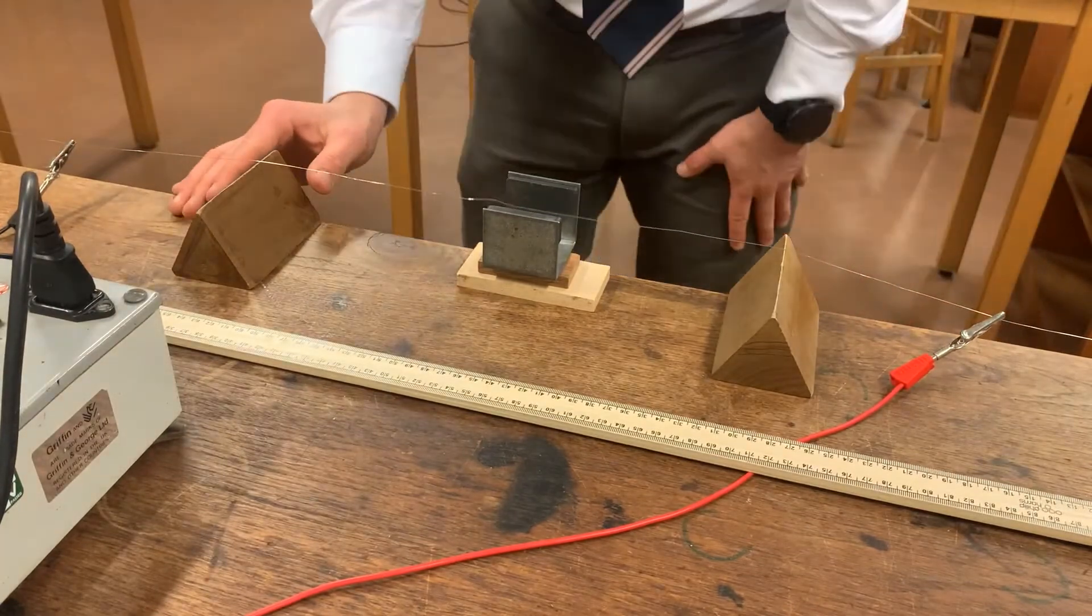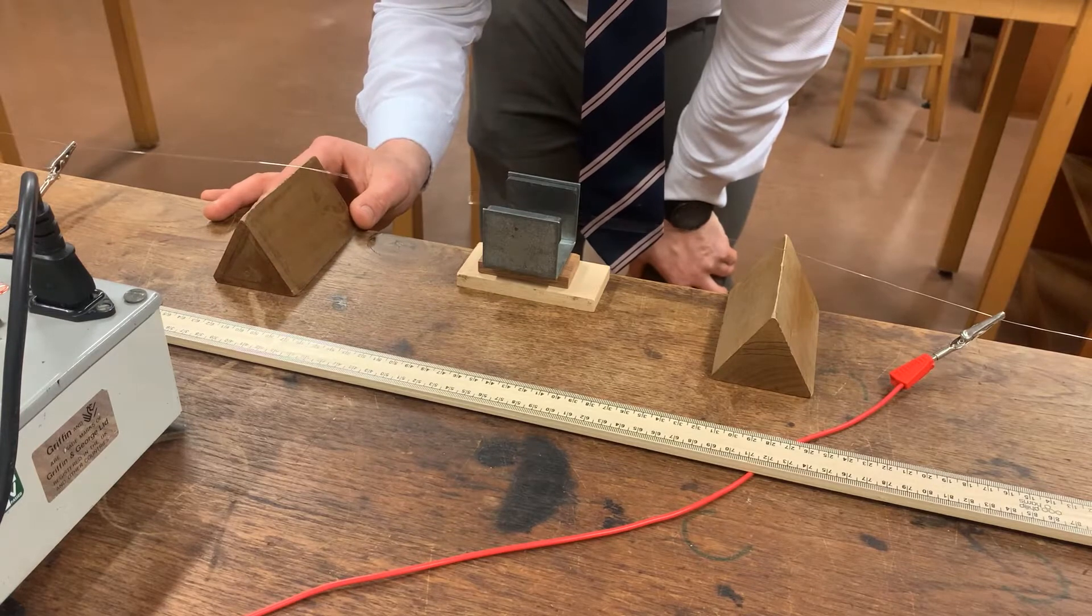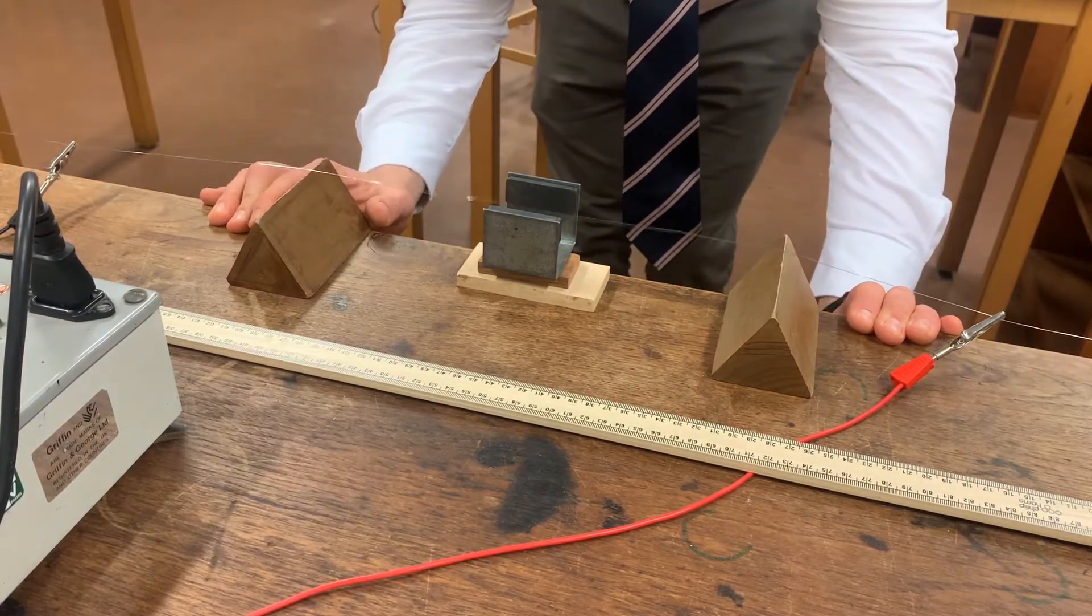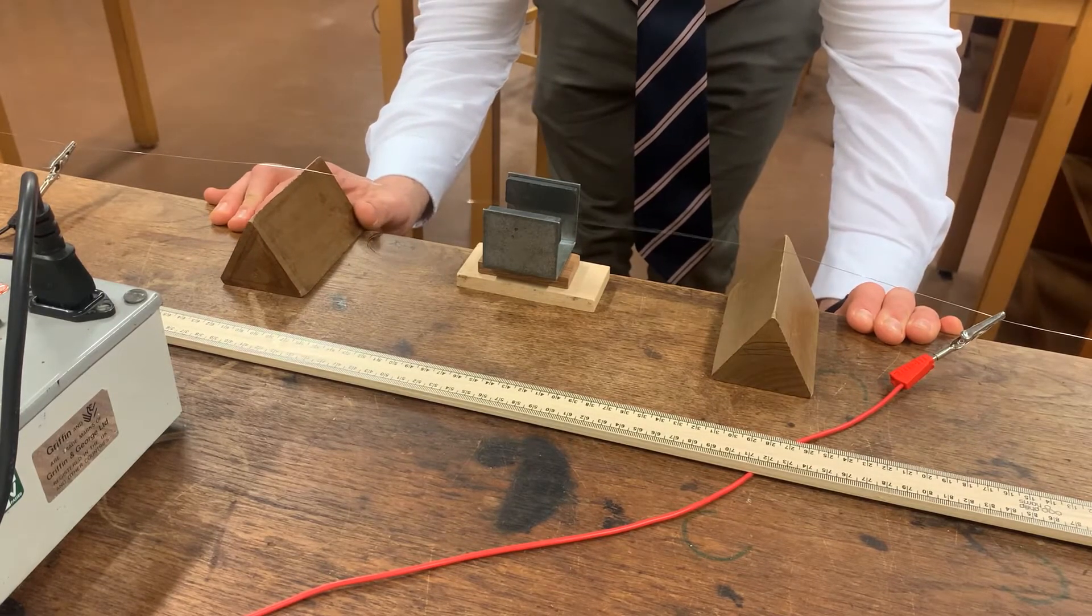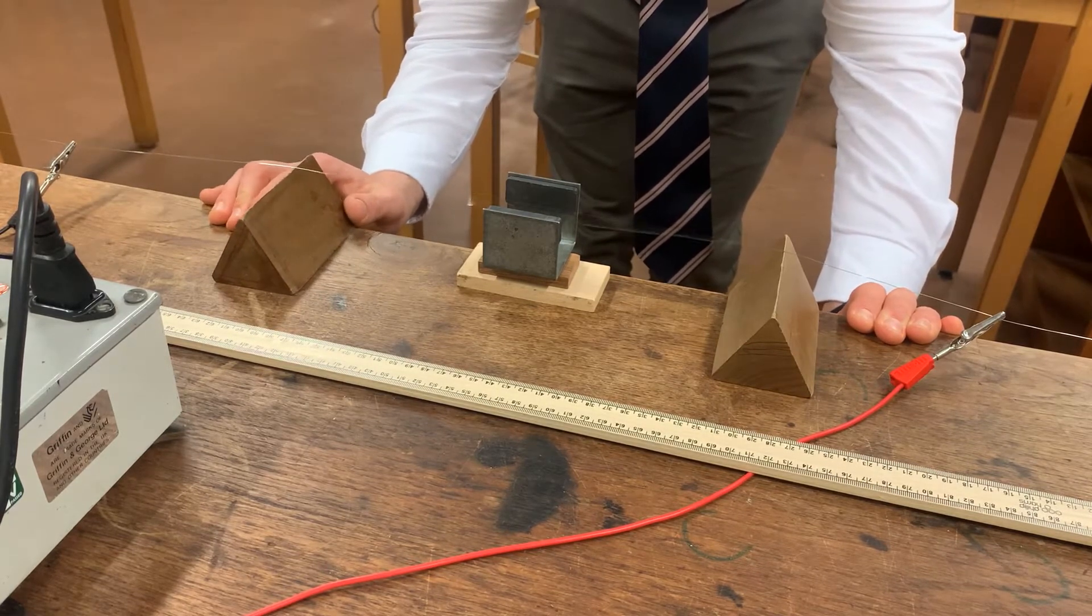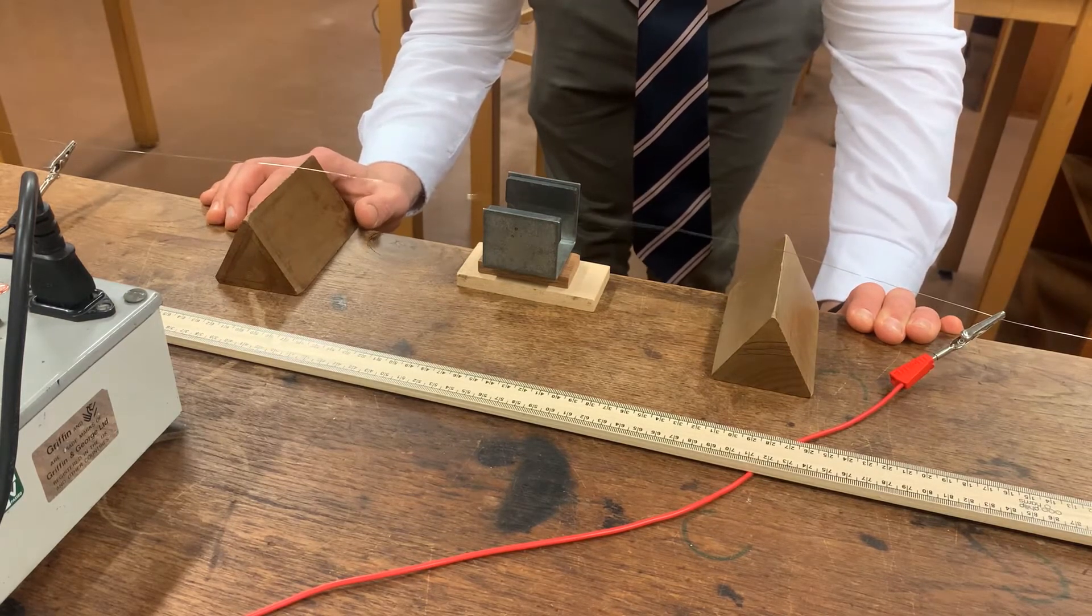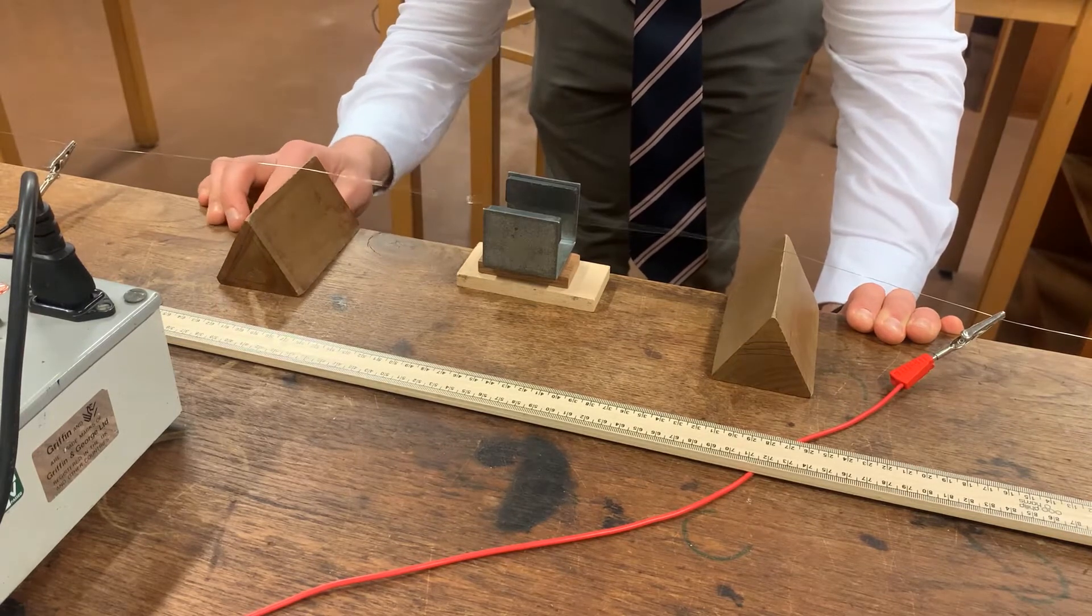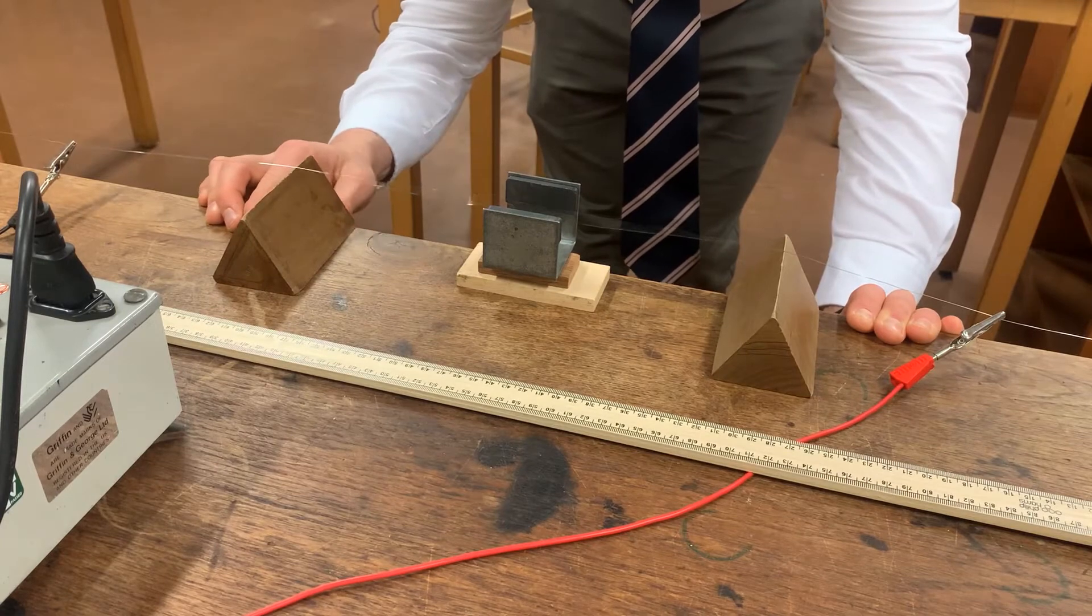And I'm going to adjust the length of wire sitting in this magnetic field until I get the fundamental. Obviously there's a range over which you get oscillation but what I'm trying to find is the position where I get resonance, maximum displacement. So that is approximately there.